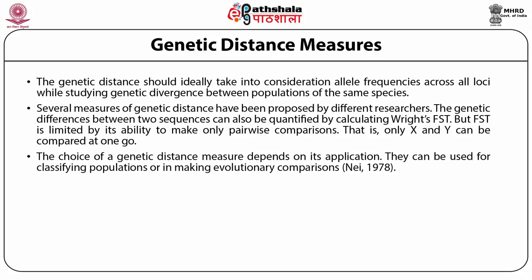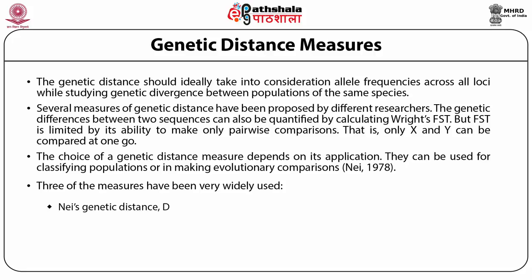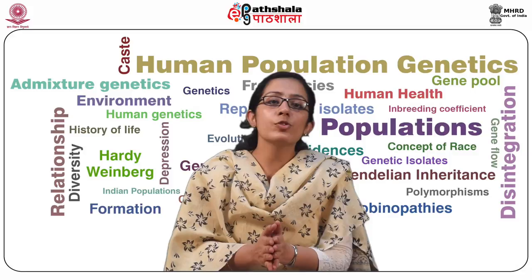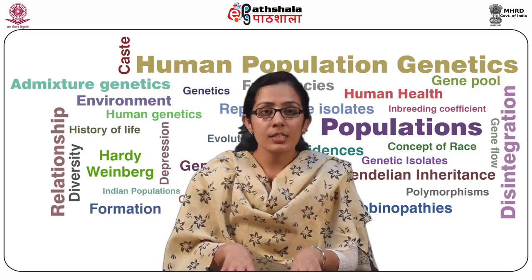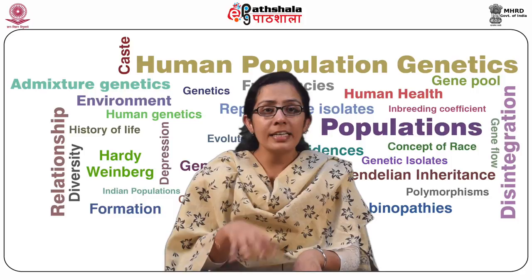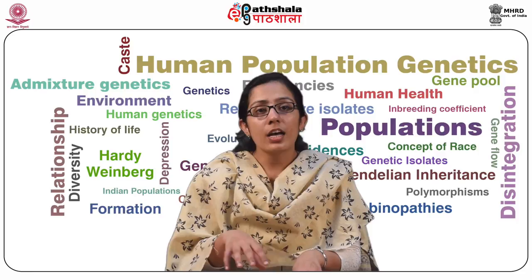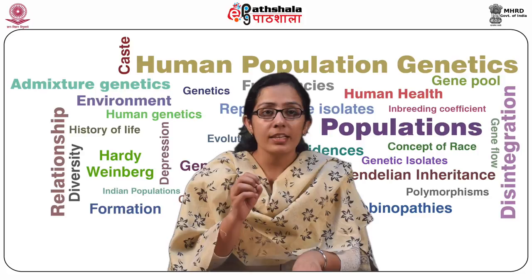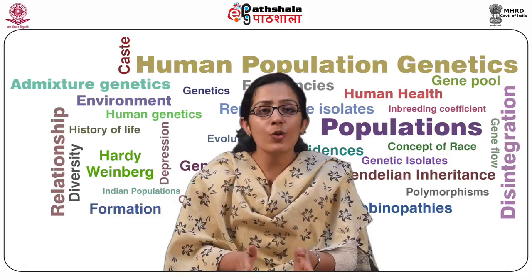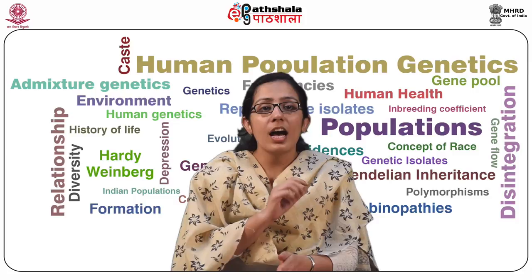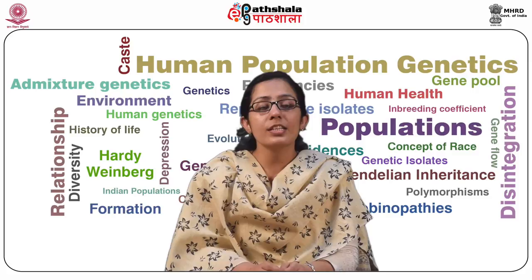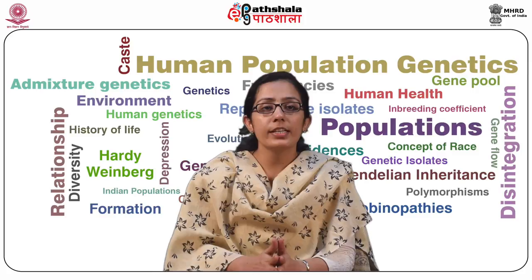The choice of a genetic distance measure depends on its application; they can be used for classifying populations or making evolutionary comparisons. Three measures have been very widely used: Nei's genetic distance D, Cavalli-Sforza's chord measure, and Reynolds, Weir, and Cockerham's genetic distance. The estimates of genetic distance are calculated based on certain assumptions: gene substitution occurs independently in different lineages; substitutions are independent of those occurring at other sites within the same lineage; evolutionary comparisons are based on the sequence as it is now; and the rate of substitution is uniform across sites.